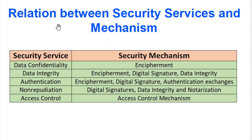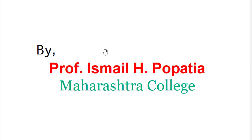Finally, there is a defined relation between security services and mechanisms. Encipherment supports data confidentiality. Data integrity is ensured through encipherment, digital signatures, and data integrity mechanisms. Authentication uses authentication exchanges, digital signatures, and encipherment. Non-repudiation uses notarization, data integrity, and digital signatures. Access control uses access control mechanisms. That concludes this session — thanks for watching.